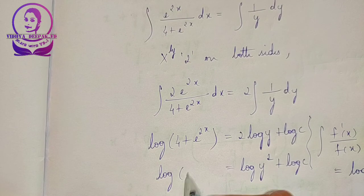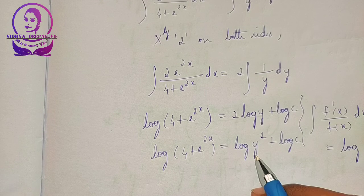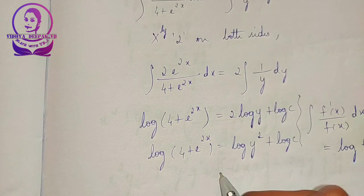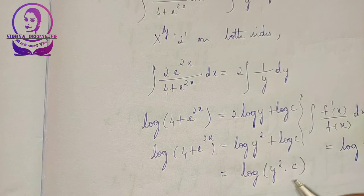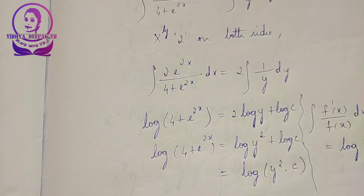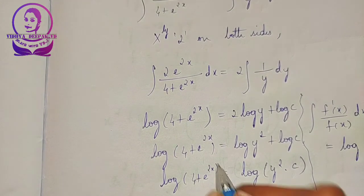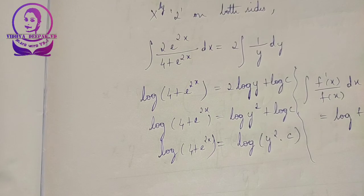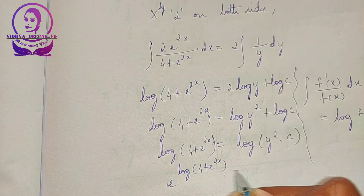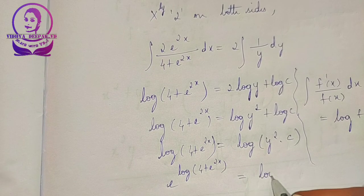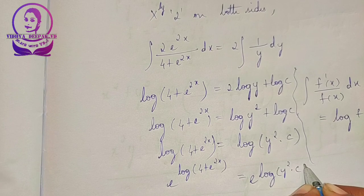Keeping the left side as it is, the right side becomes log m plus log n, which equals log mn. So this can be written as log of y squared into c. Taking e to the power on both sides, e to the power of log of 4 plus e to the power of 2x is equal to e to the power of log of y squared into c.